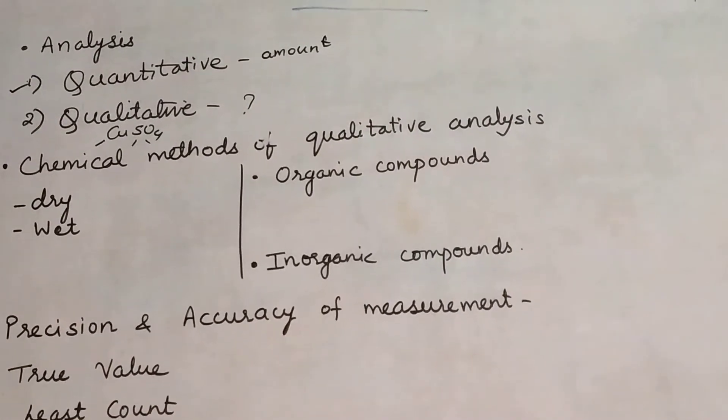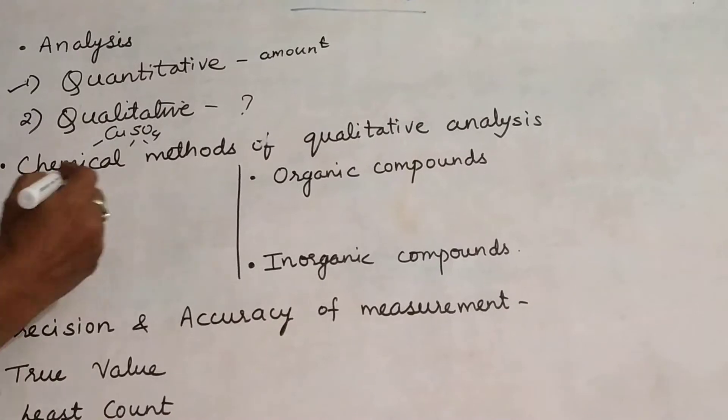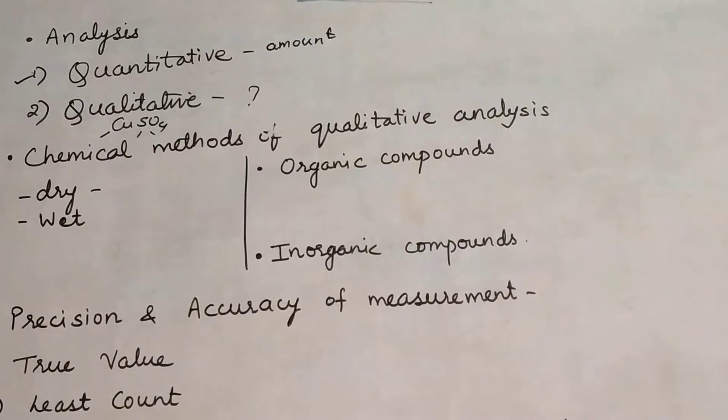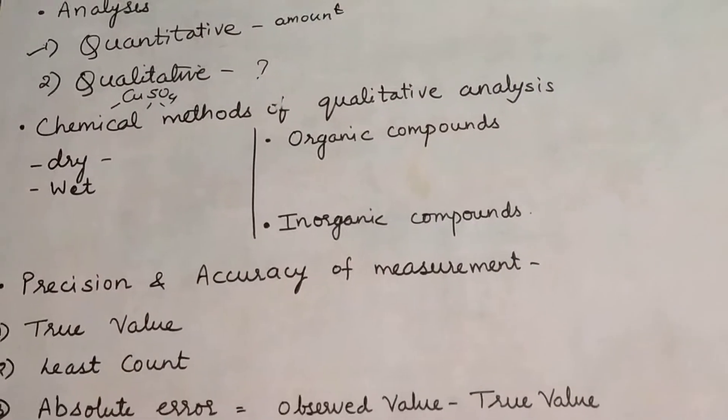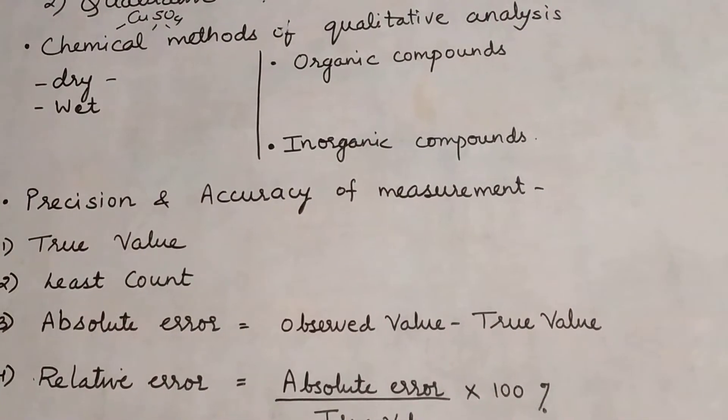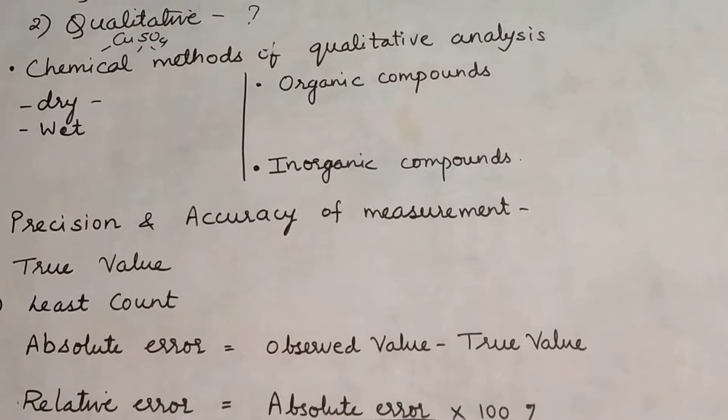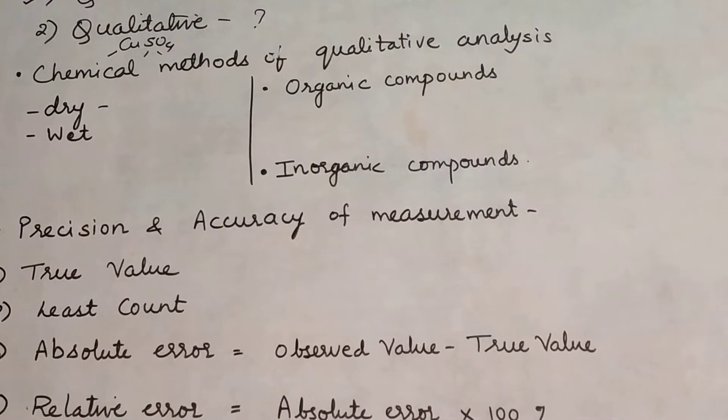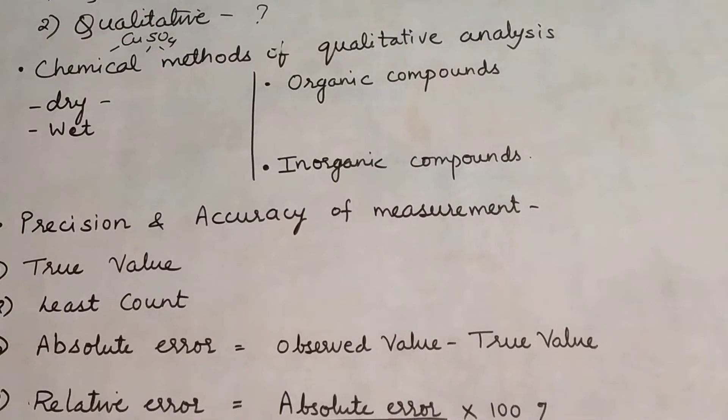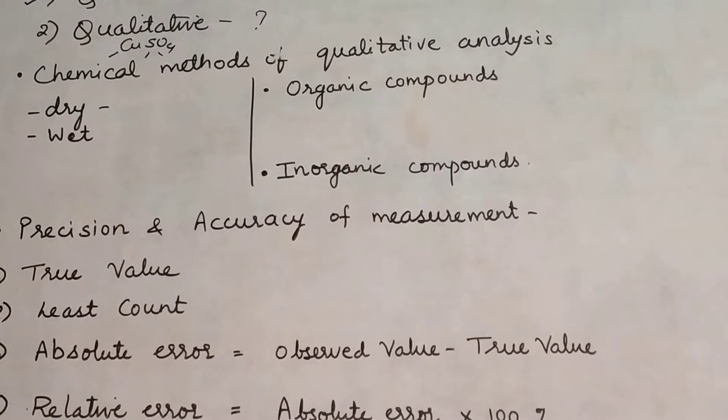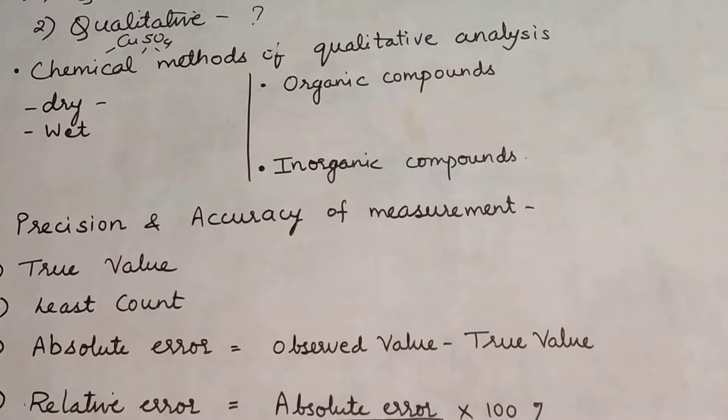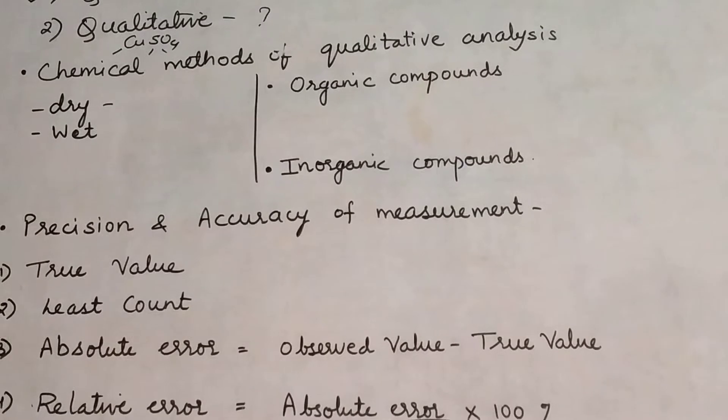Dry method - what is done? The word itself tells you that the substance is taken in dried form. Water is not added, it is totally taken in dried form, free of water. That is called dry chemical method. In wet method, the substance is dissolved in water. That becomes a wet type of method.